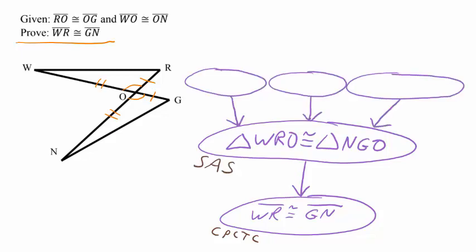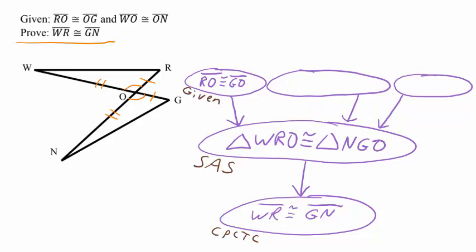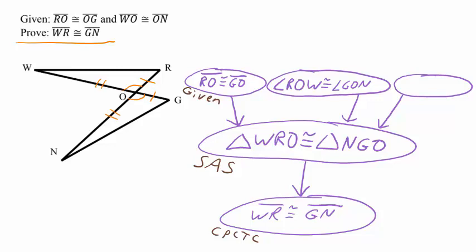We need a statement for each letter in our triangle congruency shortcut, so we need one pair of sides, a pair of angles, and another pair of sides. RO is congruent to GO because it was given to us. For the pair of vertical angles: angle ROW is congruent to angle GON because they are vertical angles. Now we need one more pair of congruent line segments: line segment WO is congruent to line segment ON because that information was given to us. There are other ways to write proofs in geometry — we can write a paragraph or two columns — but a flowchart proof is nice because the arrows show the direction of the logic, and it's a great way to communicate your thinking while doing a proof.